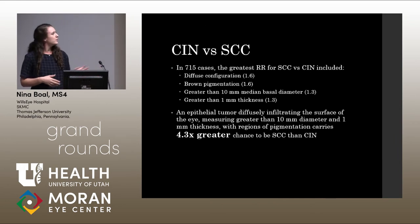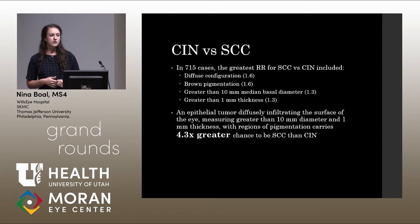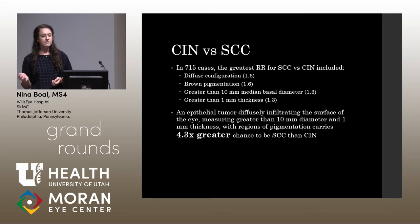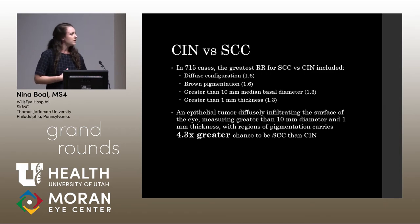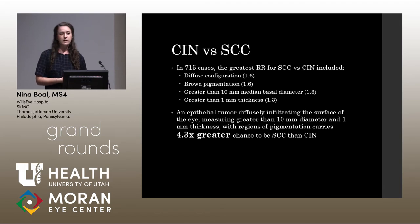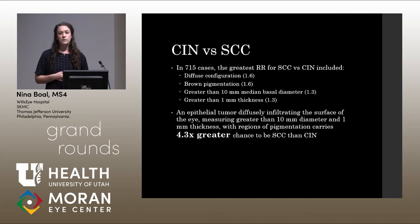For CIN versus SCC, there were 715 total cases. The greatest relative risk factors for being SCC versus CIN include more diffuse involvement, presence of brown pigmentation anywhere in the tumor, basal diameter greater than 10 millimeters, and thickness more than one millimeter. Combining these: an epithelial tumor infiltrating the ocular surface, greater than 10 millimeters in diameter, more than one millimeter thick, with a region of pigmentation is 4.3 times more likely to be SCC than CIN — a somewhat less dramatic differentiation than seen with the melanocytic tumors.